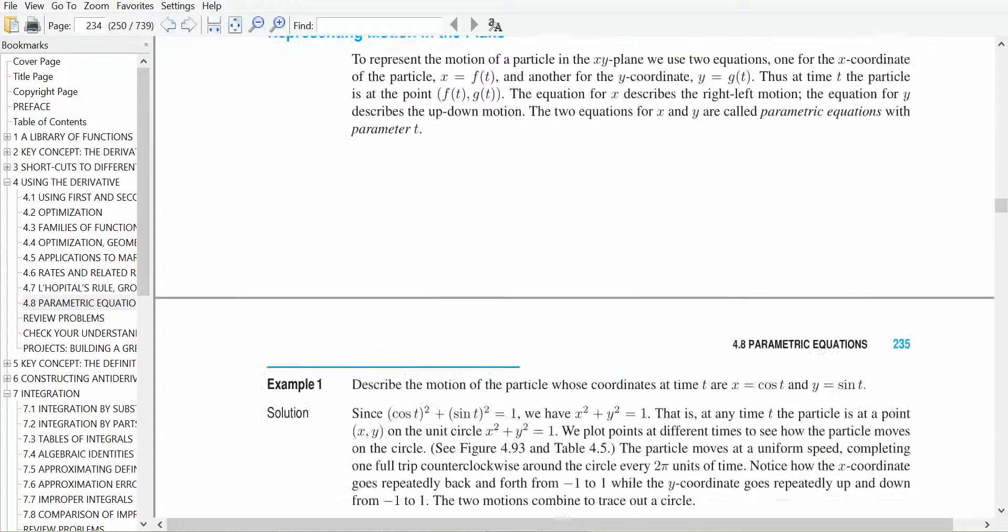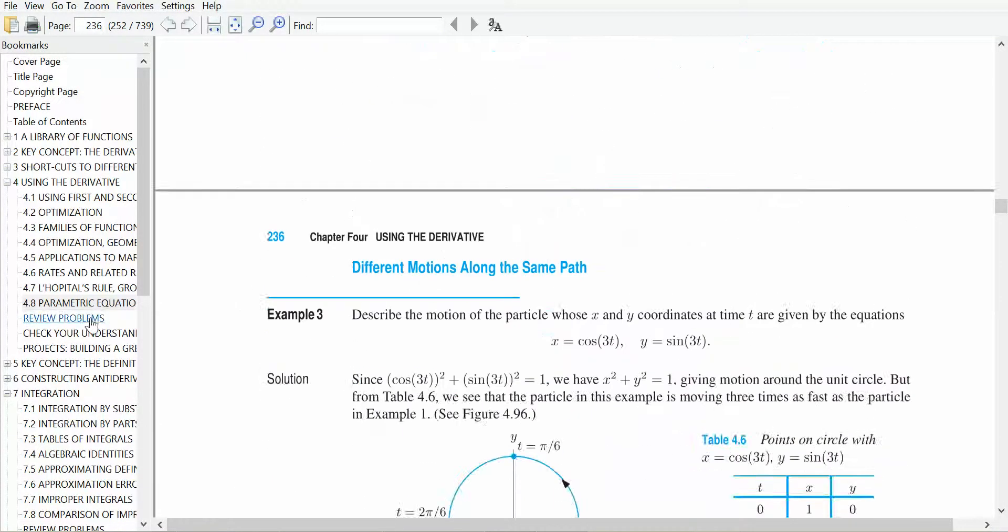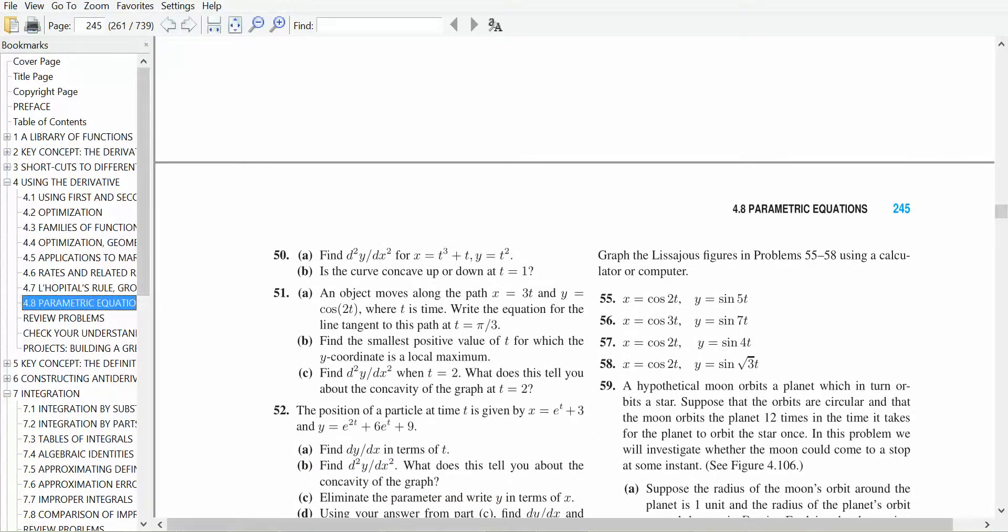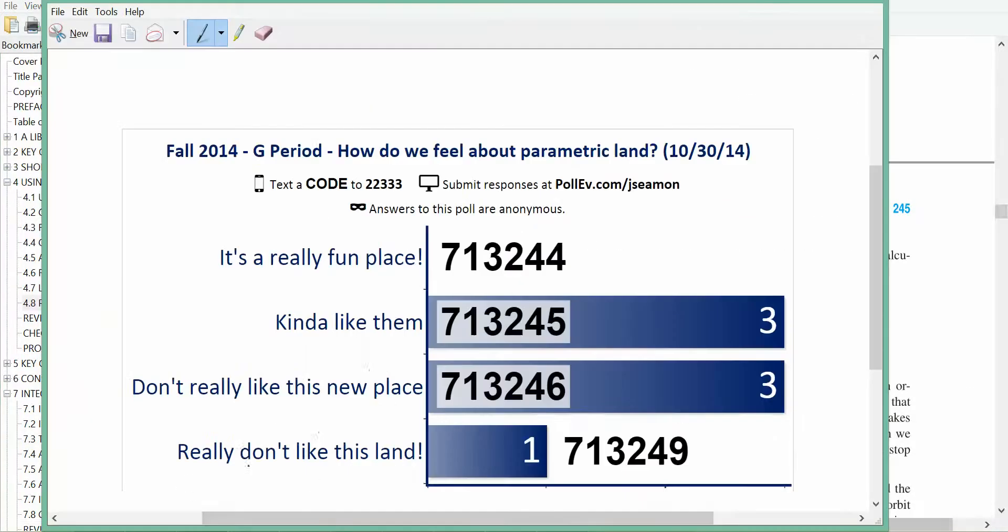50, parametric, it's 4.850, right? Yeah. Okay, let's do it, 50 right there. Very cool, this is a good one. I like this one.